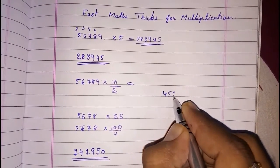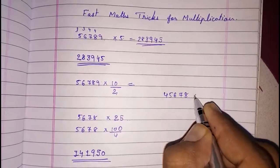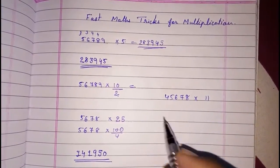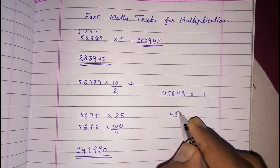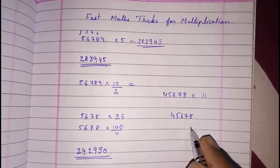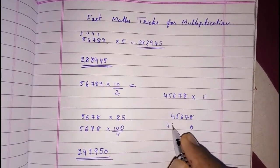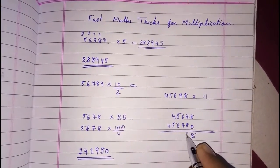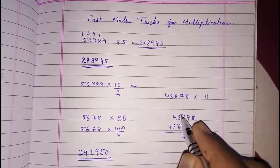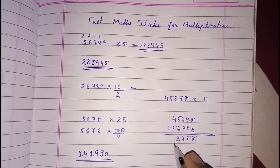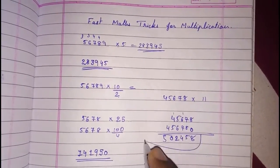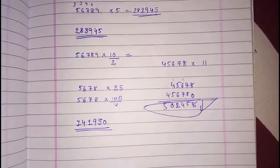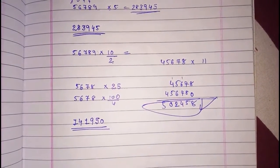45678 into 11. I will tell you directly the number. You have to write one time 45678, and then at 0, and again 45678. Directly you have to add this. 15 carry 1, 14 carry 1, 12 carry 1, 10 carry 1, 5. So this way you can use this trick.